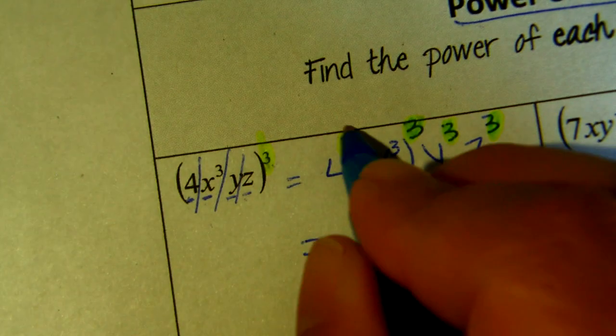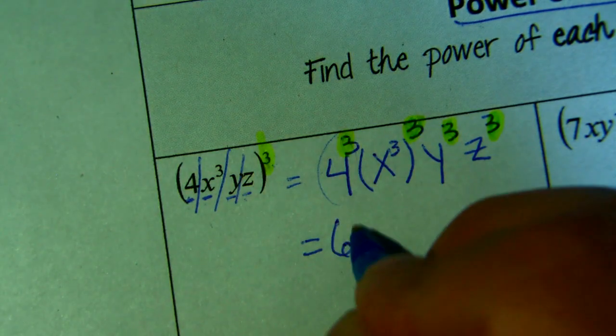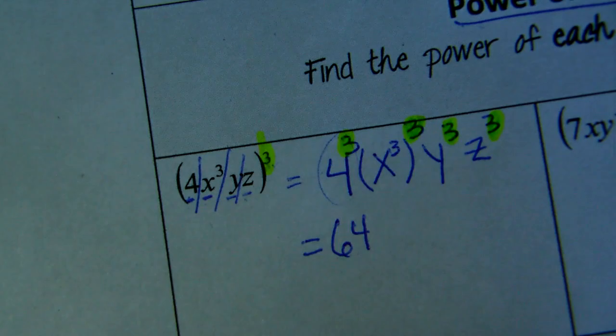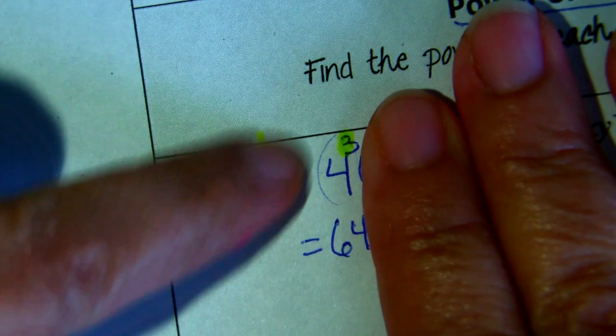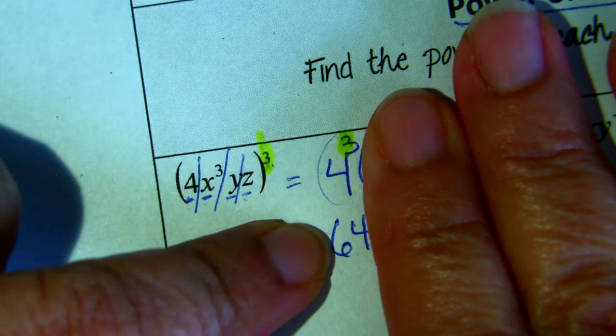So, right here, this number comes out to 64. Notice how I cover the letters. 4 to the power of 3 gives you 64.